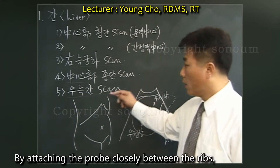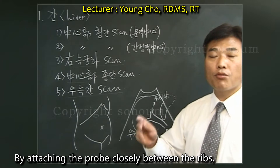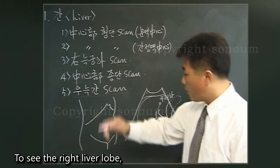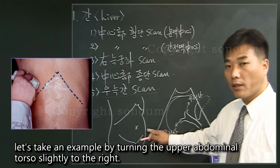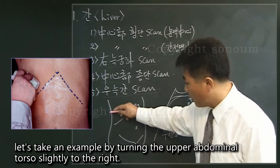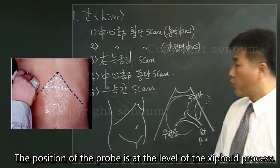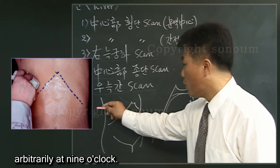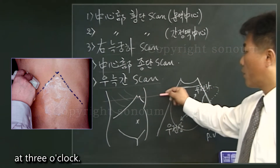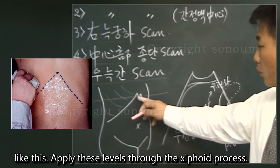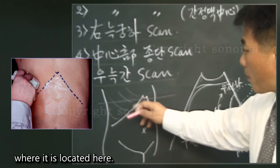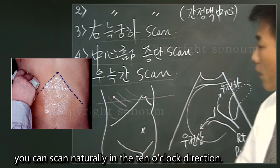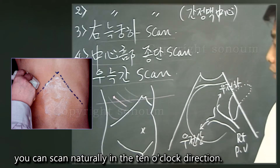The liver right intercostal scan is performed by placing the probe closely between the ribs to see the right liver lobe. Turning the upper abdominal torso slightly to the right, the probe is positioned at the level of the xiphoid process — arbitrarily at 9 o'clock to 3 o'clock. Applying these levels through the xiphoid process, placing the probe between the ribs allows you to scan naturally in the 10 o'clock direction.